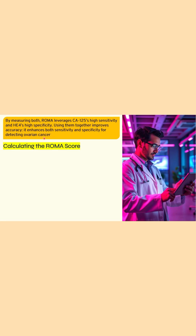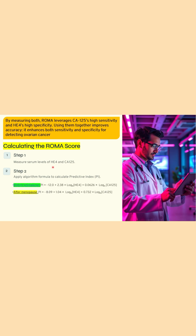Now let's see how the ROMA score is calculated. The first step is to measure the levels of HE4 and CA125 in the serum. The second step is to apply the algorithm formula to calculate the predictive index. There are two formulas: one for before menopause and one for after menopause.